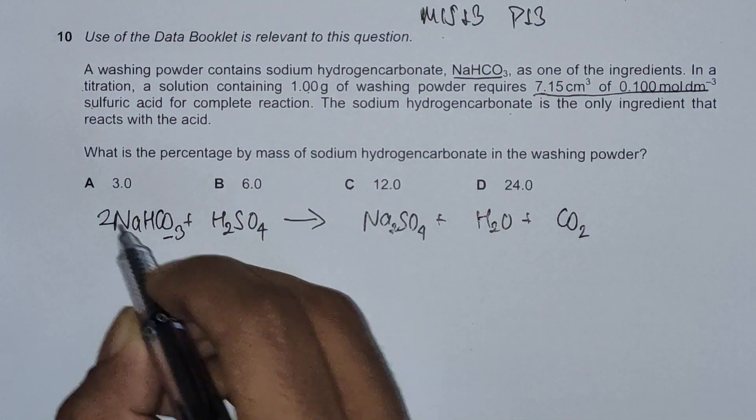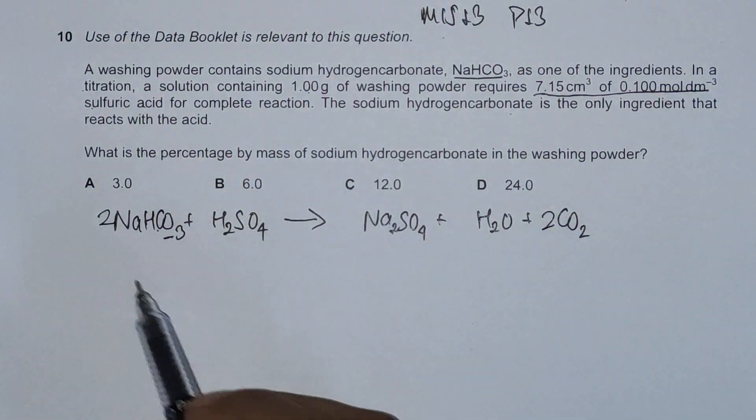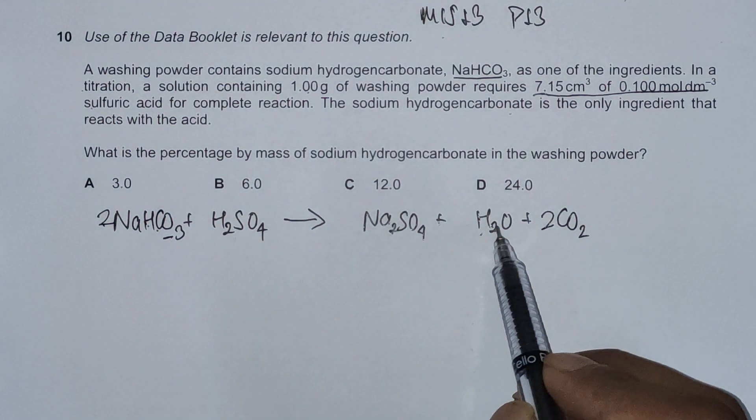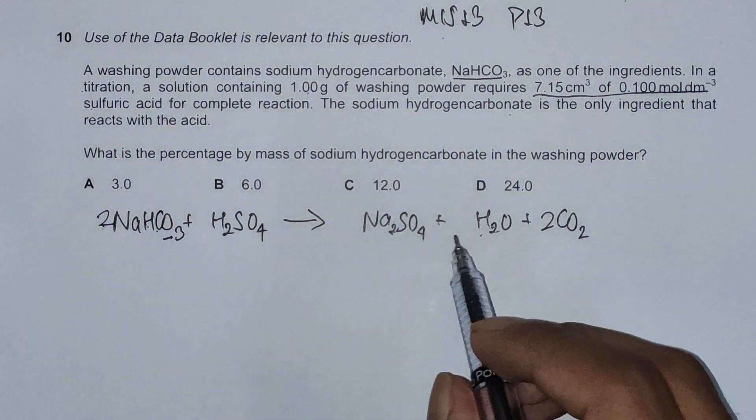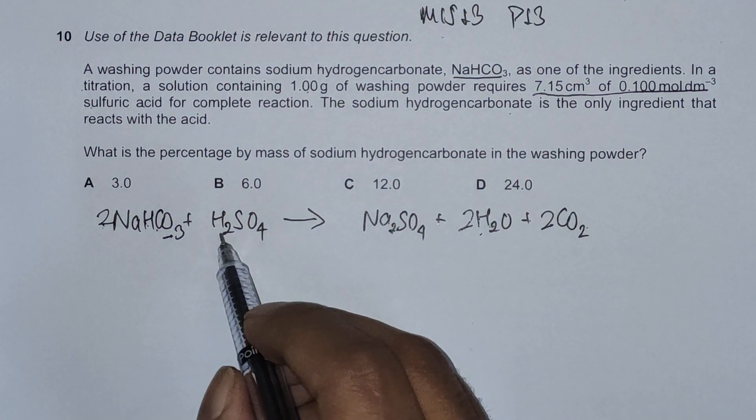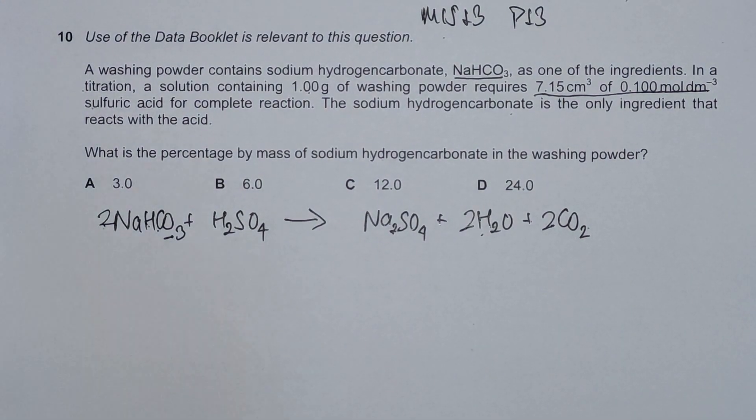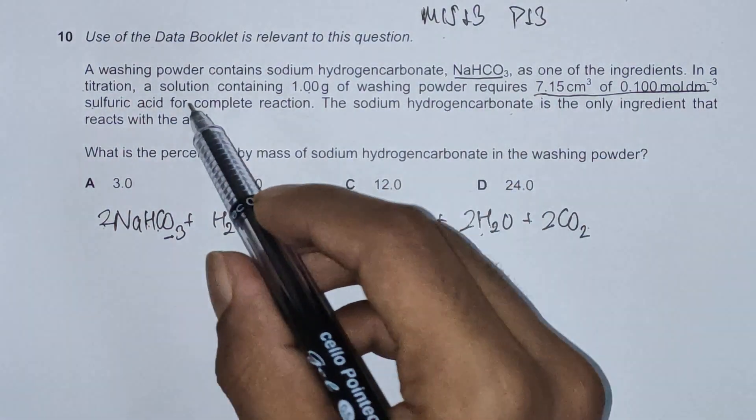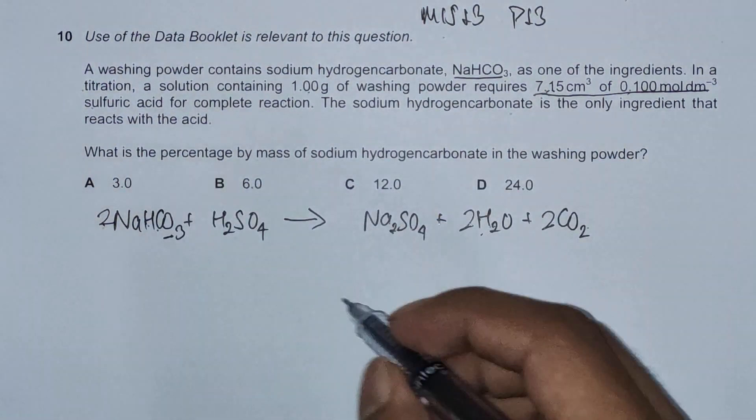To balance this, we have two sodium atoms, so we need two here. Two carbon atoms, two carbon atoms, and hydrogen is balanced. For oxygens, we have six here, so we need two more hydrogen atoms because it's H2SO4. SO4 is balanced, so the equation is now balanced.